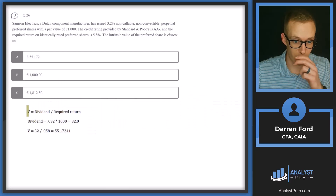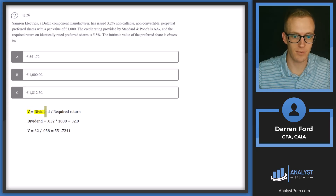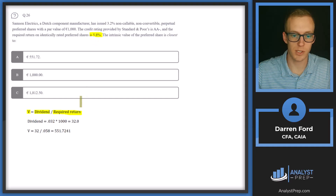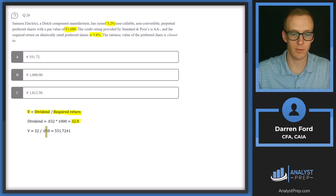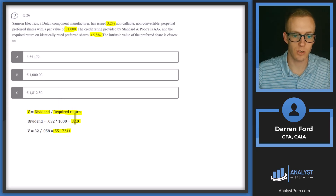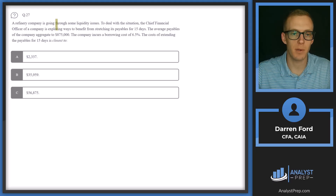Value of preferred shares equals the dividend divided by the required rate of return. The required rate of return is 5.8%. The dividend equals the coupon times par value: 3.2% times 1,000 equals 32. Dividing 32 by 0.058 gives us 551.7241, which rounds best to answer A.